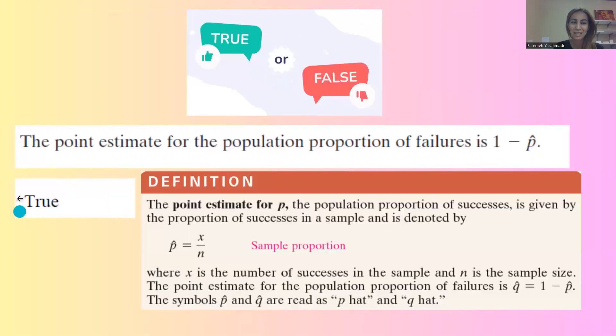This statement is true. The point estimate for population proportion of failures is 1 minus p hat.